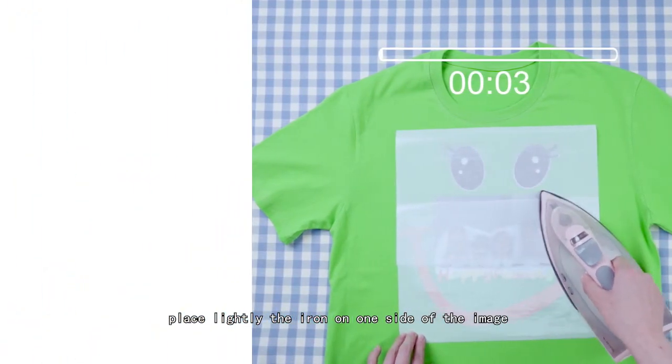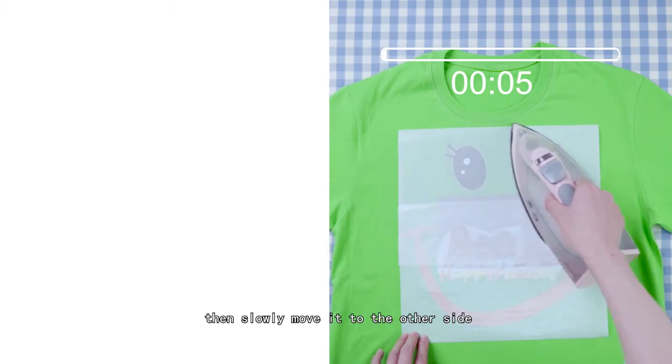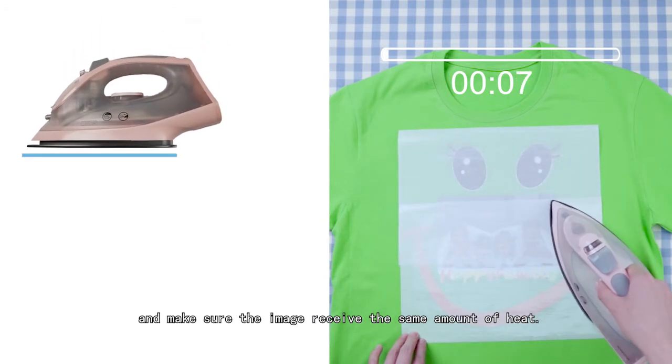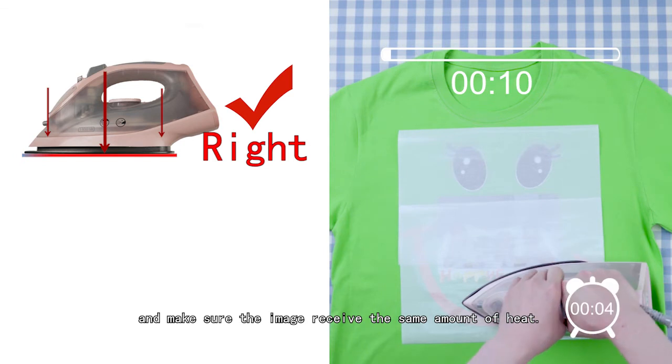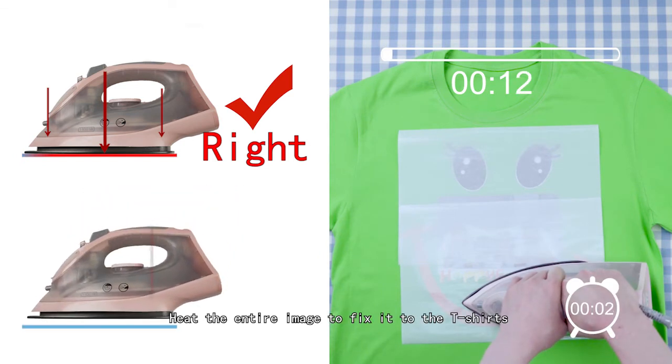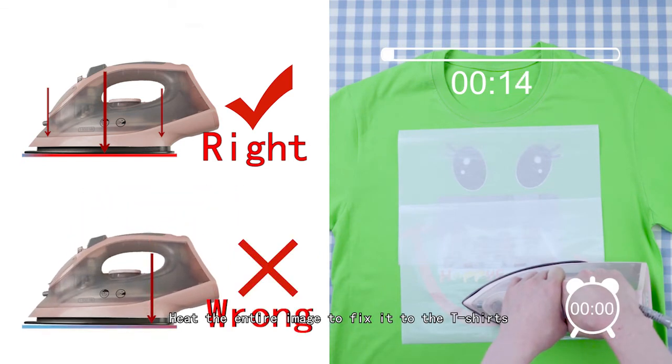Lightly place the iron on one side of the image. Then slowly move it to the other side and make sure the image receives the same amount of heat. Heat the entire image to fix it to the T-shirt.